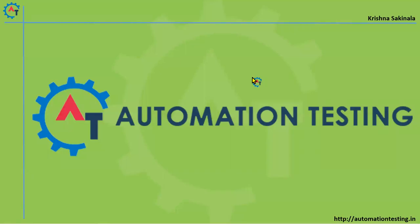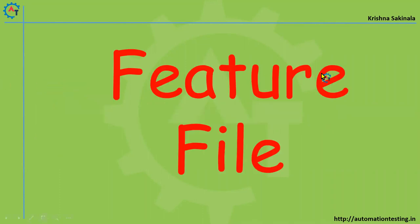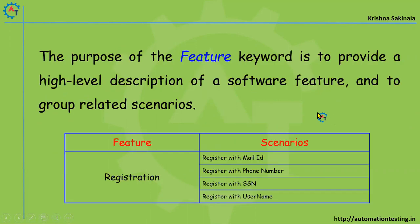Welcome to automation testing dot in. In this video we will see what is a feature file in Cucumber. The purpose of the feature keyword is to provide a high-level description of your software feature and to group related scenarios. So feature is a keyword in Cucumber and it provides a high-level description of a software feature and groups related scenarios.